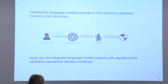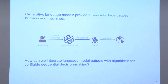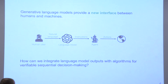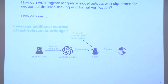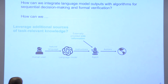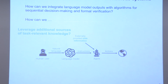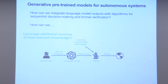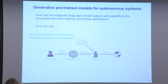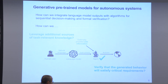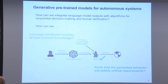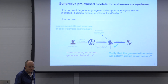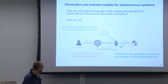We thought that generative language models provide new interfaces between humans and machines, and at this interface we try to solve sequential decision making problems. One way they can enter this process is encoding and helping us leverage sources of task-relevant knowledge that may not be readily available. We can try to extract that and incorporate it into the design of autonomous systems.